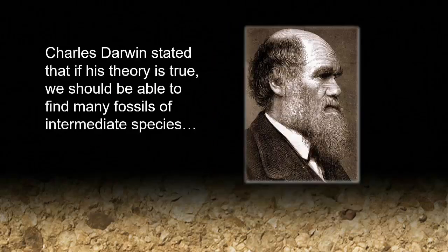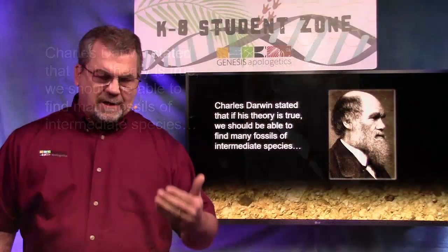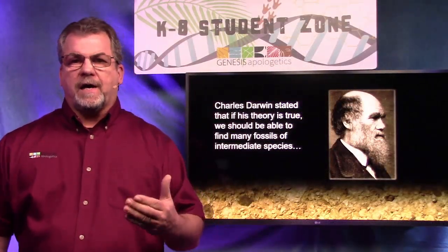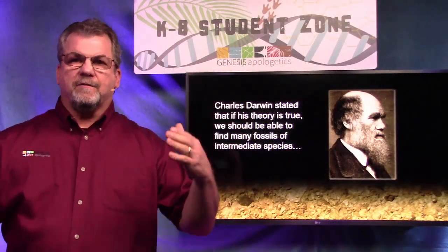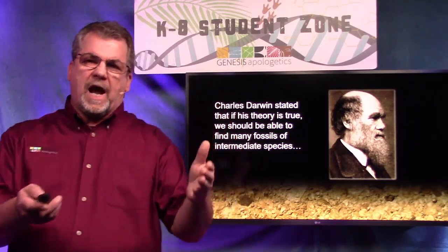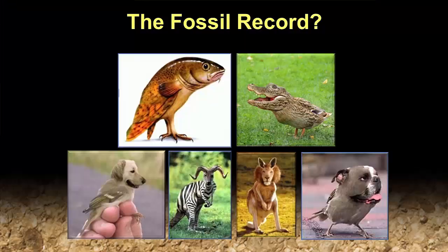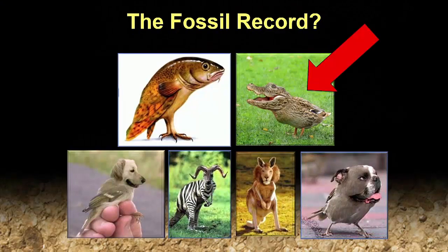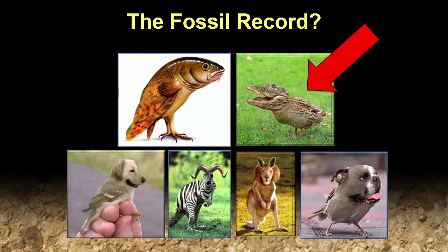According to Darwin, if his theory is true, what we ought to find is lots of fossils of intermediate animals — in other words, animals changing from one kind to another. Things like this? Is that what we find? I don't know about you, but that guy is really disturbing. Can you imagine him flying around and chomping on people's ears? That would be very scary. But is that what we find?